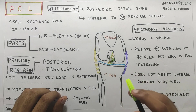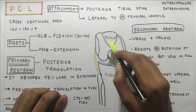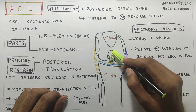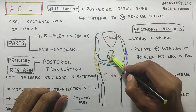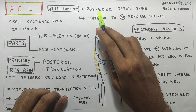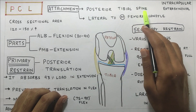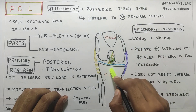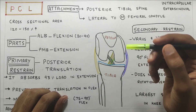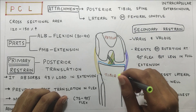PCL is attached lateral to the medial condyle. These are the two condyles — this is the medial condyle and it is attached lateral to the medial condyle. Distally, it is attached to the posterior tibial spine. Between the tibia there is a spine and the posterior part of the spine is where the attachment of PCL is.